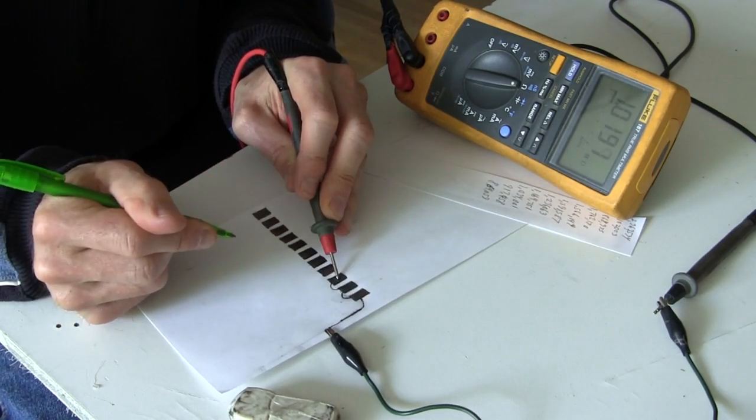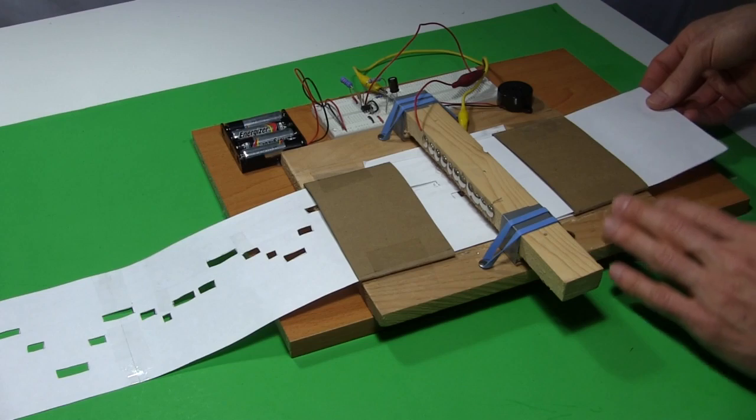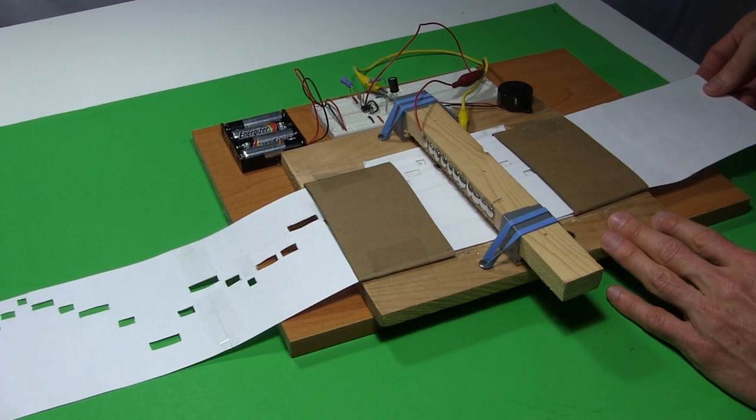However, its resistivity is still lower than what you get from the graphite from a pencil, which is what I used for my 555 timer music player here.